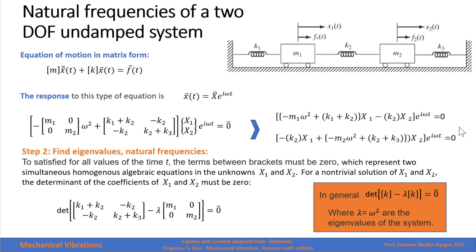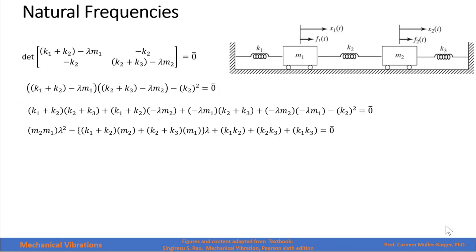This matrix equation leads to two simultaneous equations. For a non-trivial solution where x1 and x2 are not both zero, the terms in the brackets must equal zero, which means the determinant of that expression equals zero. This is equivalent to solving the eigenvalue problem, where the eigenvalues lambda equal the square of the frequency of the harmonic response. The determinant expands into a polynomial.